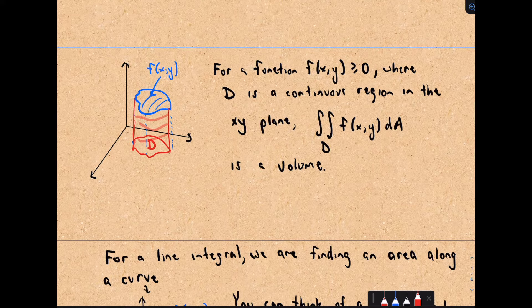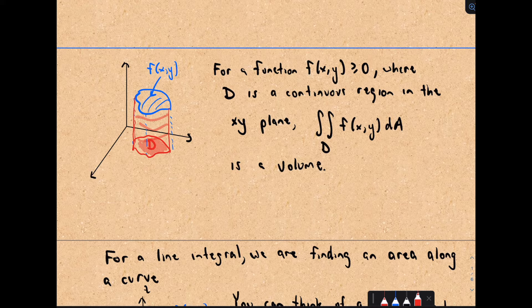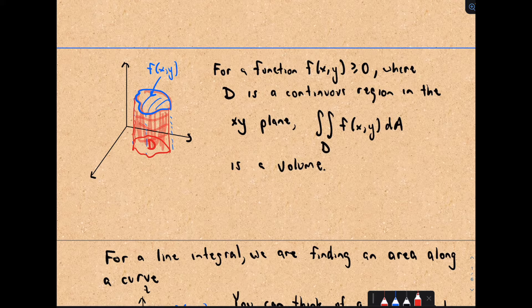So let's step back for a second. At this point, I'm sure you've seen calculating double integrals over a region D, where D is some region in the XY plane. If our surface F(x,y) is greater than or equal to zero, what we're doing is projecting that surface down to the XY plane and looking at region D — you can think of it like its shadow. When we compute this double integral, we're finding the volume of that solid.